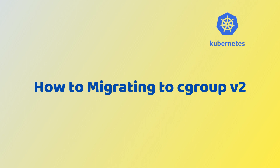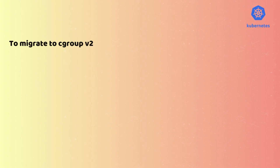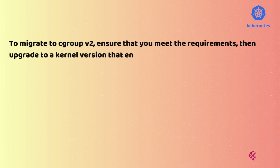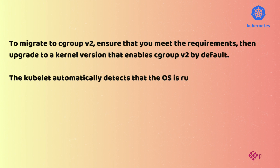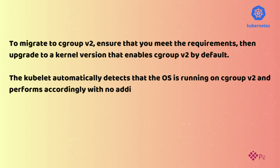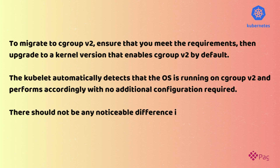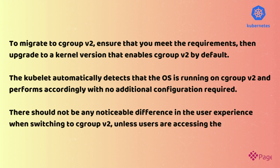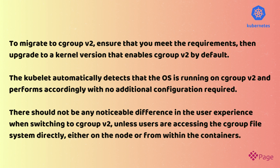To migrate to CGroup V2, ensure that you meet the requirements, then upgrade to a kernel version that enables CGroup V2 by default. The kubelet automatically detects that the OS is running on CGroup V2 and performs accordingly, with no additional configuration required.